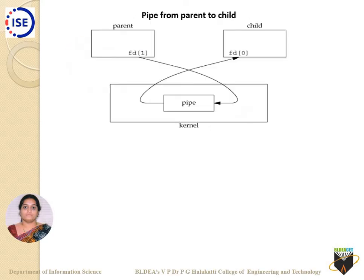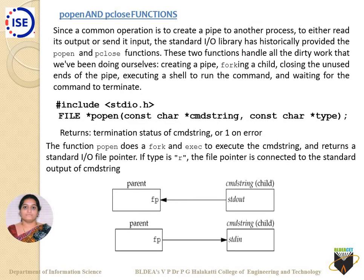For a pipe from parent to child: the parent process uses fd[1] as the writer, while the child process uses fd[0] to read from the pipe.